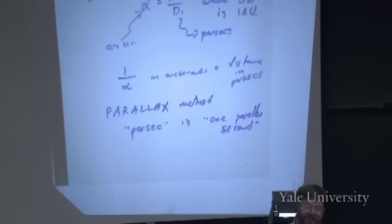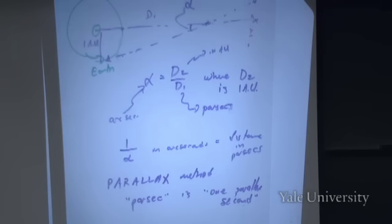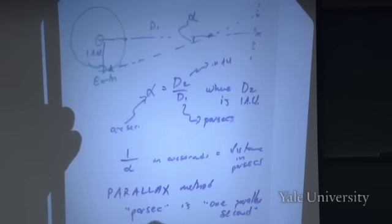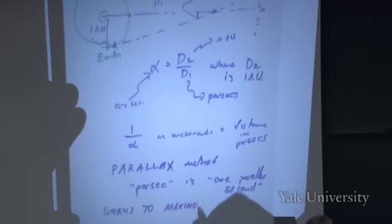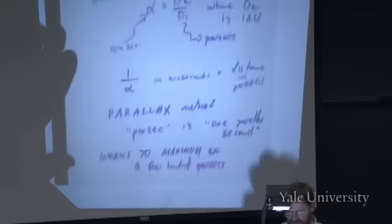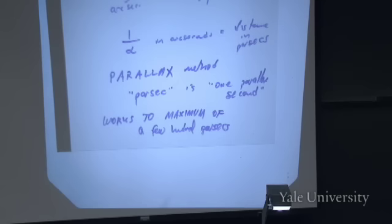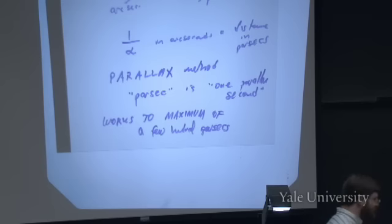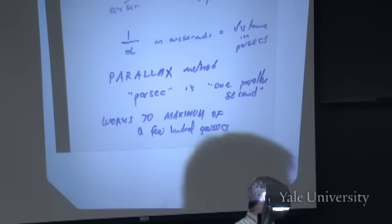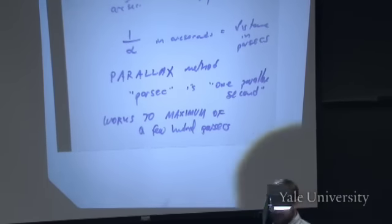The problem with the parallax method is that it only works on things that are really nearby. We can measure maybe a hundredth of an arc second change in position, but no better than that. So you can only get distances out to a few hundred parsecs. But the center of our galaxy is 8,000 parsecs away, and other galaxies are megaparsecs away. This only works for the very nearest stars, and that's why there was all this confusion about the spiral nebulae.